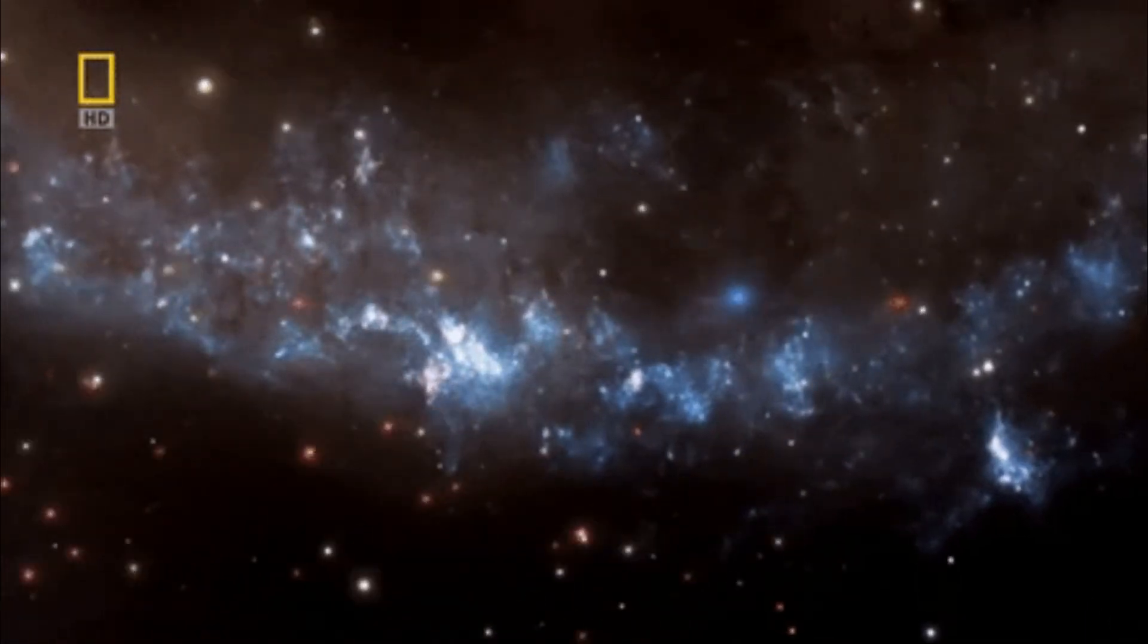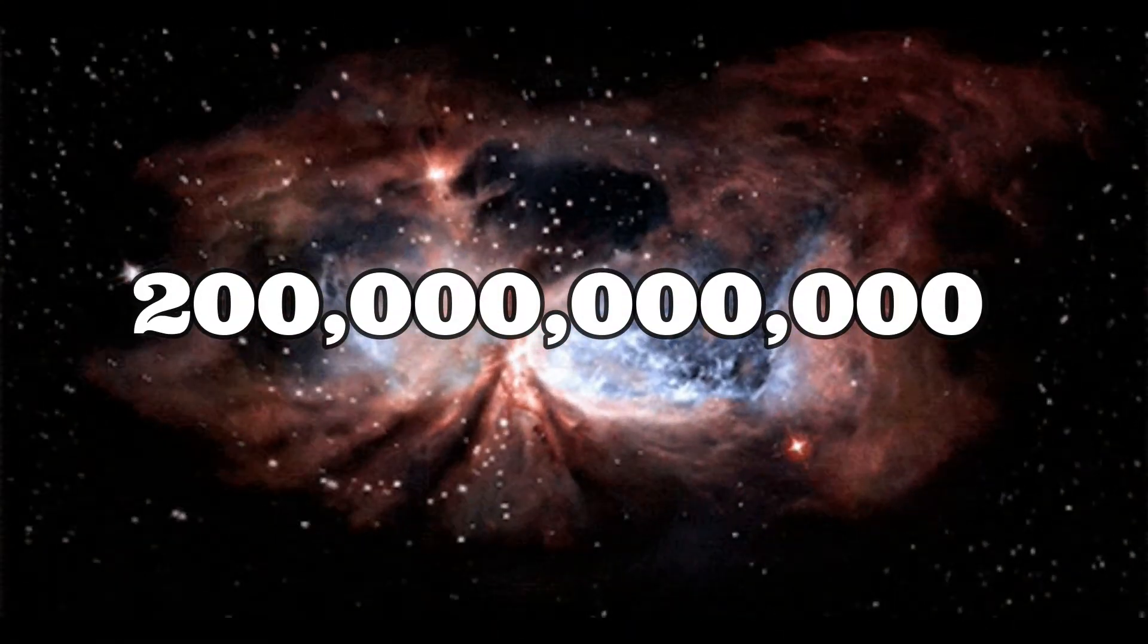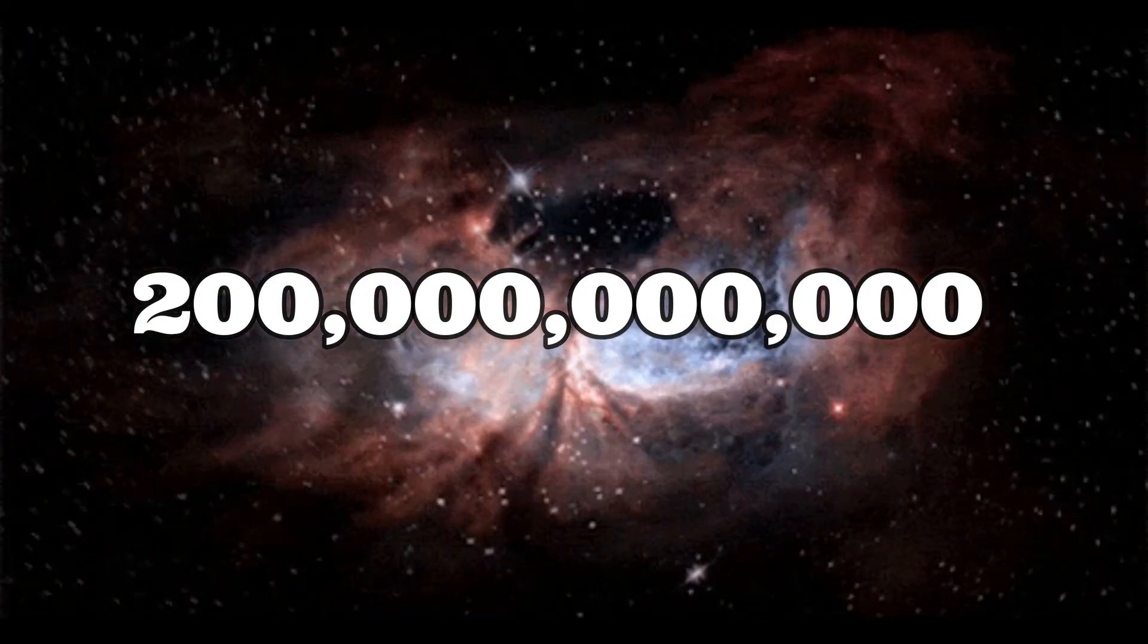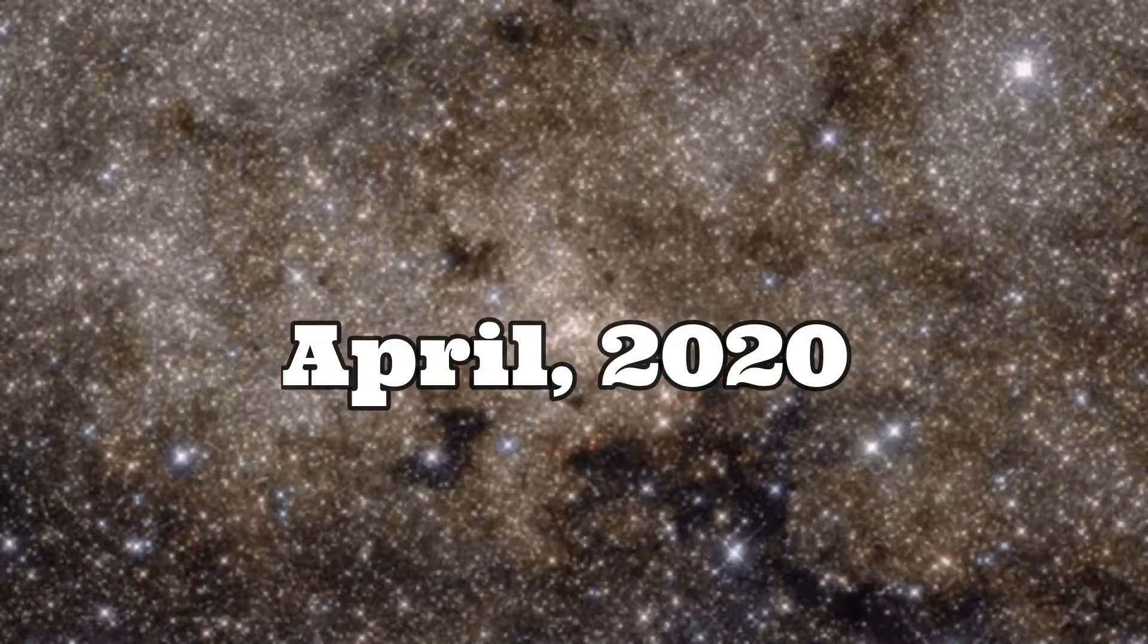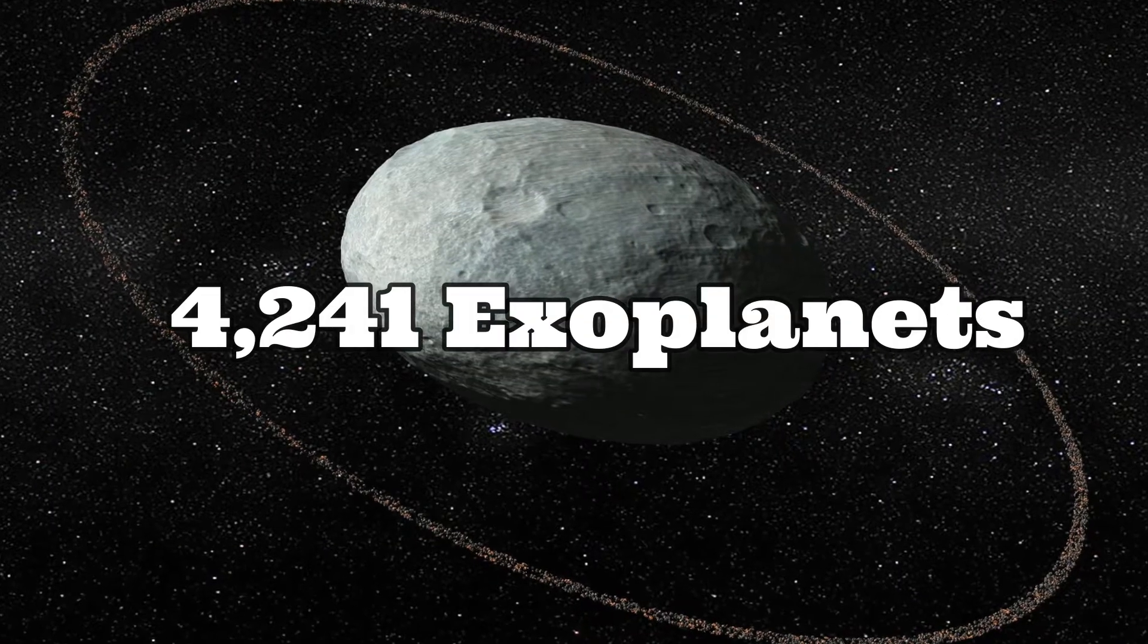The universe is one of the most immense things, containing at least 200 billion galaxies in which there are 1 billion trillion planets. Our Earth is one of them. As of April 2020, there are 4,241 confirmed exoplanets discovered.